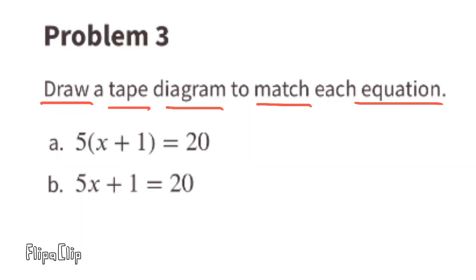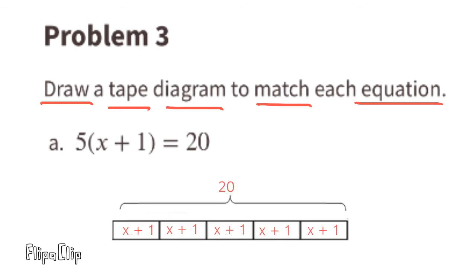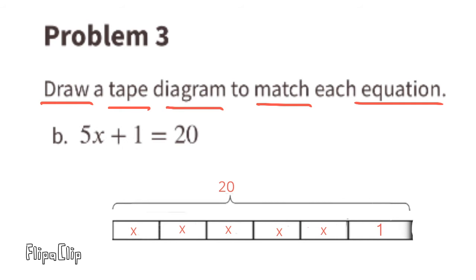Problem number 3: draw a tape diagram to match each equation. A: 5 times (x plus 1) equals 20. Here I've drawn a tape diagram with x plus 1 drawn out 5 times, and altogether it equals 20. B: 5x plus 1 equals 20. Here you can see that I've drawn x five different times and then added 1, and together that equals 20.